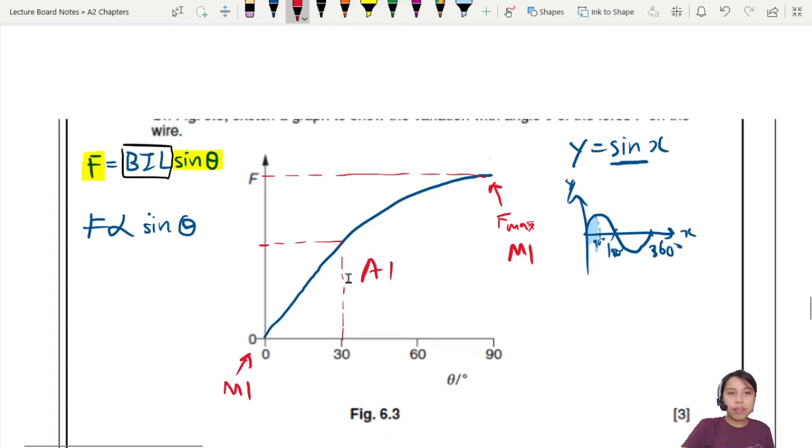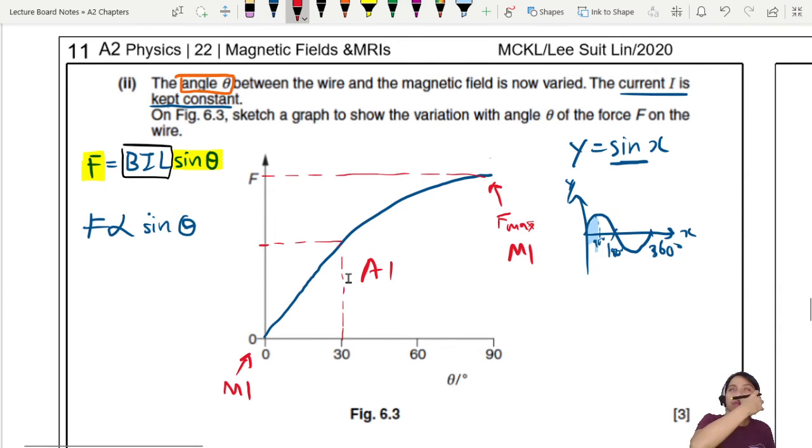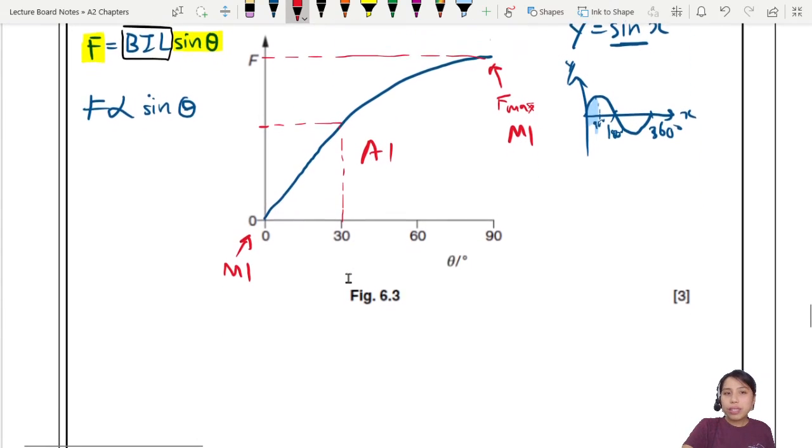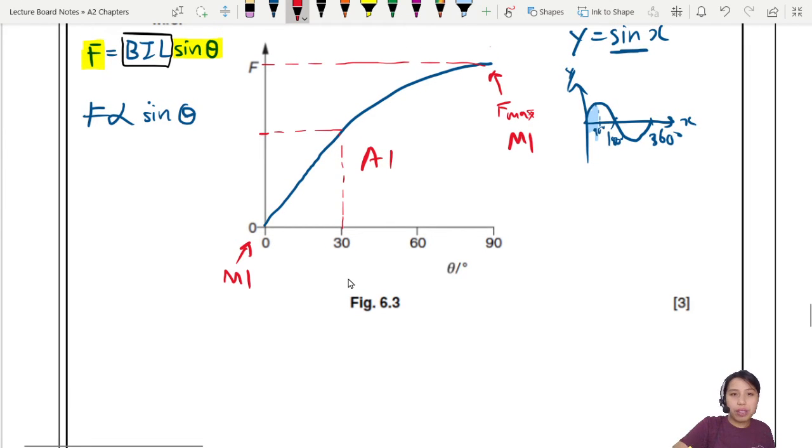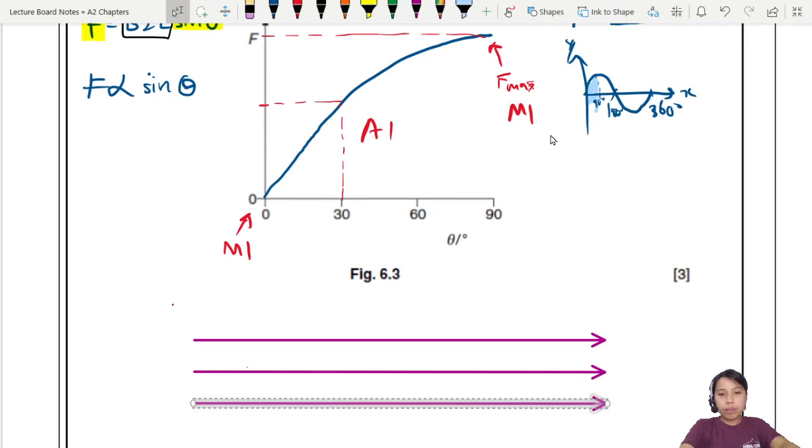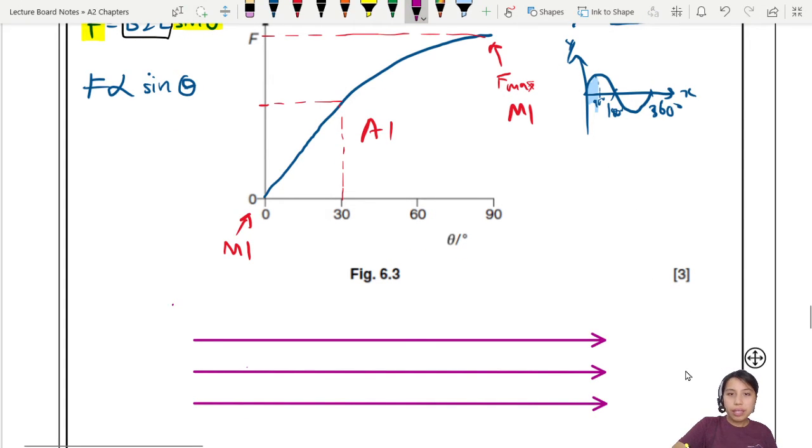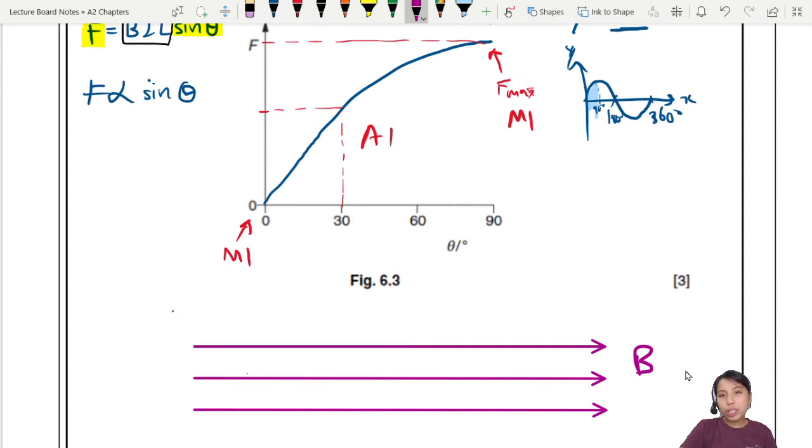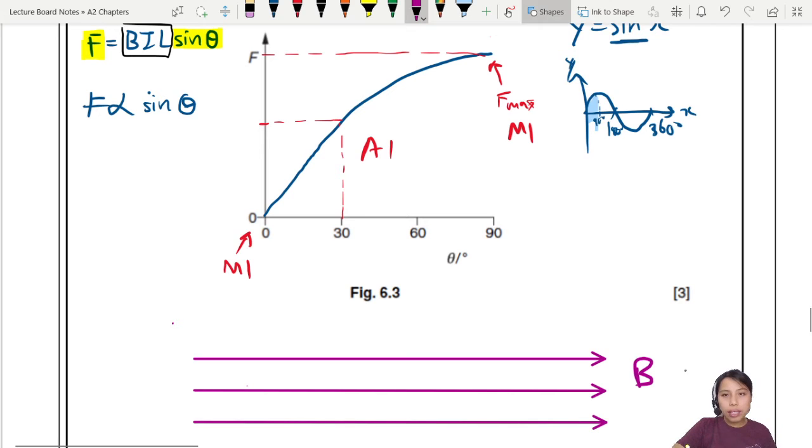So how do you understand this graph and link it with your understanding from the previous theory video? You can see where the force is the maximum. If we draw all the magnetic field flux lines here. What if the conductor was aligned and parallel to the magnetic field? Would there be a force? No. Why? What's the angle here? Angle is 0, so force is 0. No force.